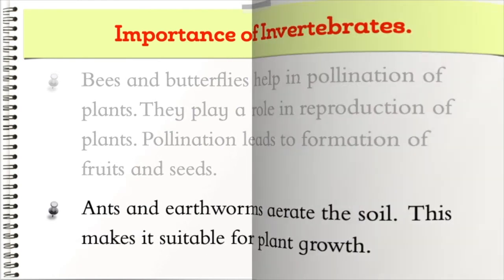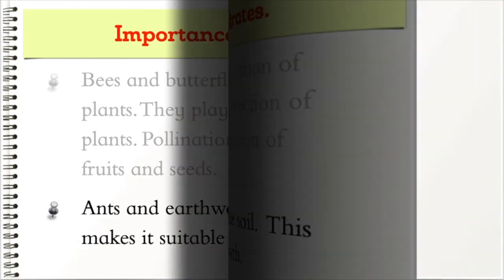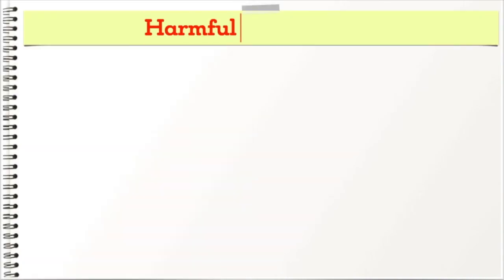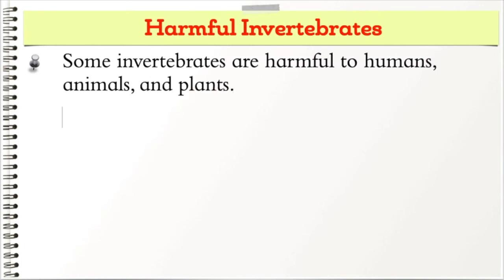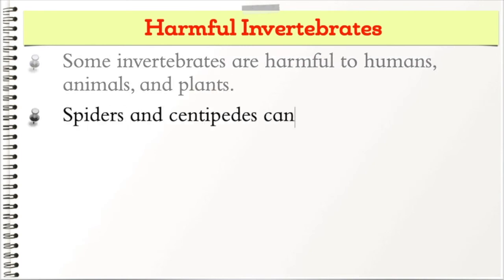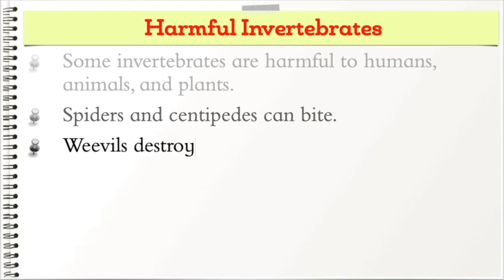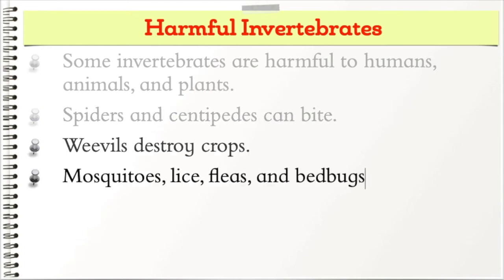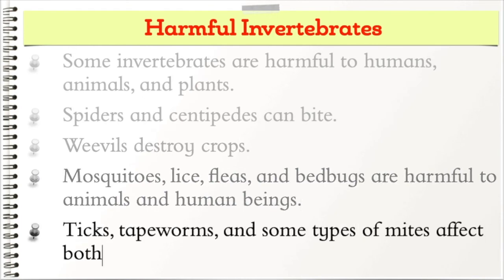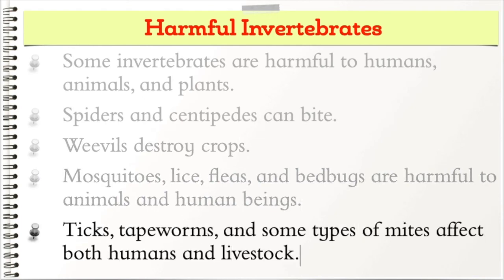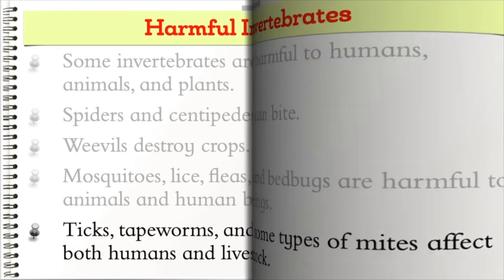Some invertebrates are harmful to humans, animals, and plants. Spiders and centipedes can bite. Weevils destroy crops. Mosquitoes, lice, fleas, and bedbugs are harmful to animals and human beings. Ticks, tapeworms, and some types of mites affect both humans and livestock.